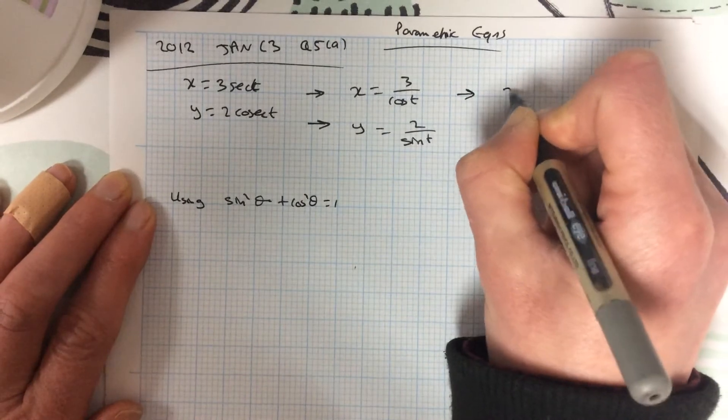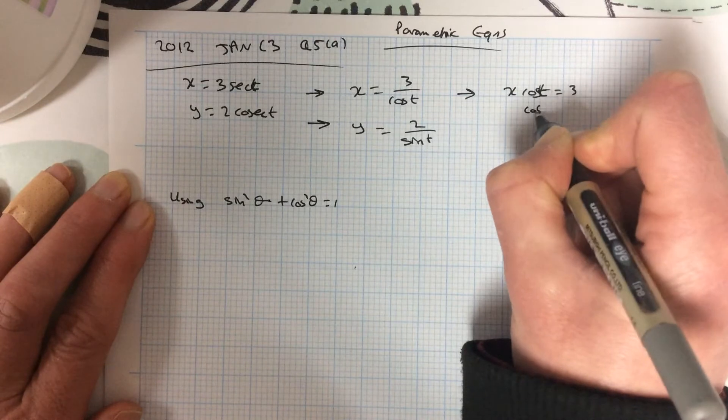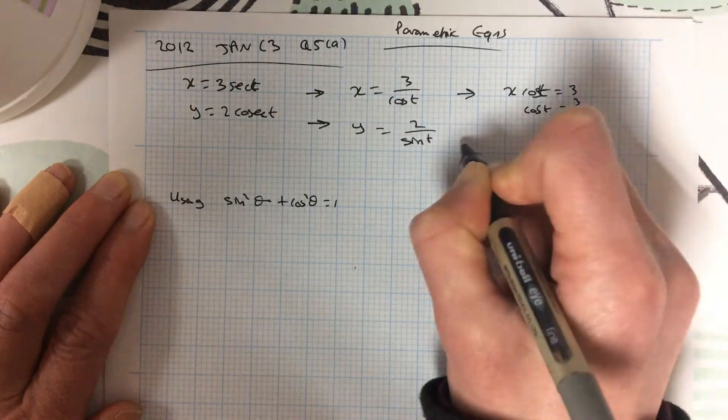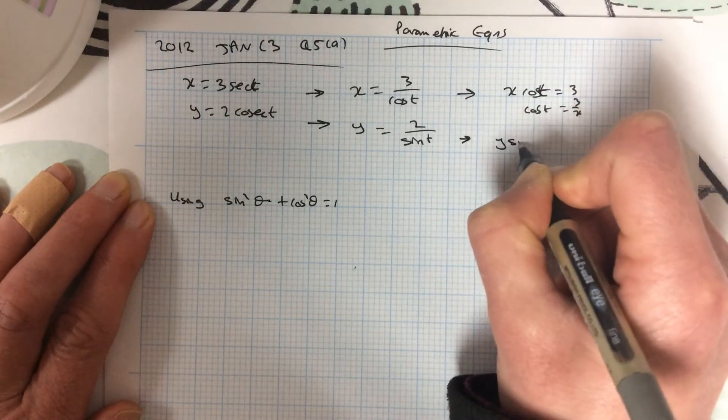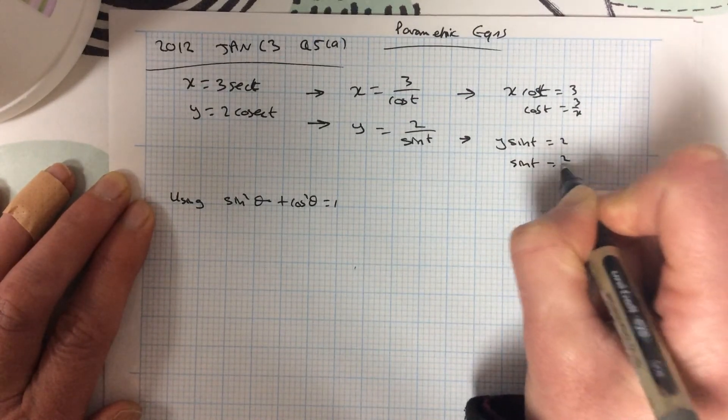So let's just rearrange this. So we've got x cos t equals 3. So cos t equals 3 over x. Over here, y sine t equals 2. So sine t equals 2 over y.